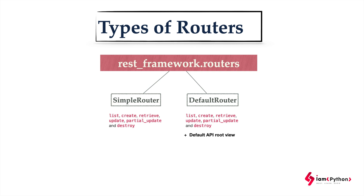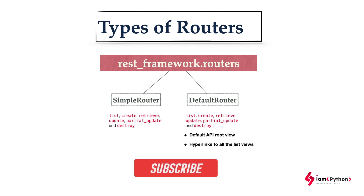The difference between DefaultRouter and SimpleRouter is that DefaultRouter includes a default API root view and, most importantly, hyperlinks to all the list views. So when you are displaying all the list of data, you will see hyperlinks. I will show you practically how the difference looks.